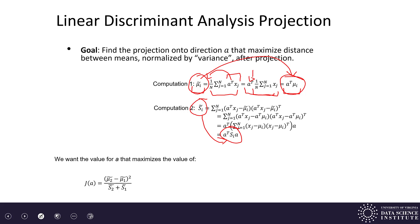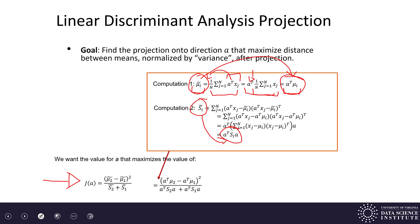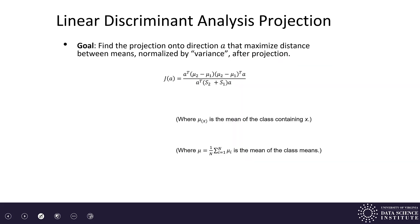Using those two results, J(a) is equal to the formula derived from those computations. Writing it out more carefully, we can bring the a-transposes all the way to the outside through some linear algebra. To the degree you've seen this type of linear algebra before it should make sense; if not, it's good to get familiarity with how these things are computed. We want to maximize the value of J(a).